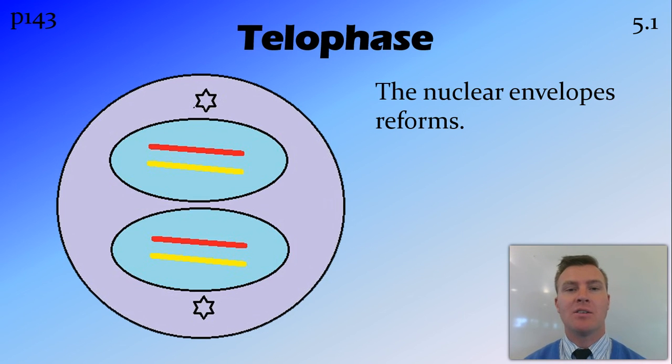And lastly, for mitosis, we have telophase, where that nuclear envelope reforms around the chromosomes that have been pulled to each pole. So we have one nucleus in each pole within that cell.